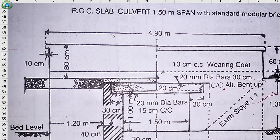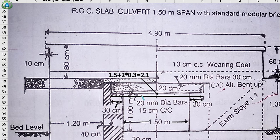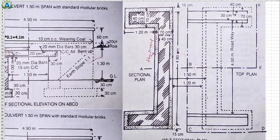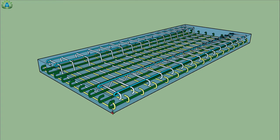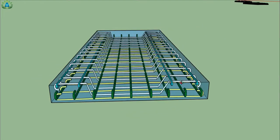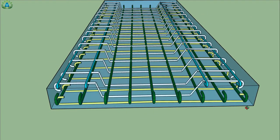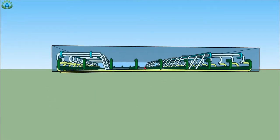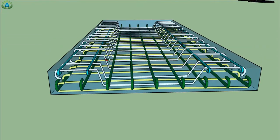We have to calculate the total length, breadth, and height of this slab. The total width of this slab is 1.5 meter opening plus 30 centimeter bearing on each side, making the total width 2.1 meters. The height of the slab is 20 centimeters, and the slab runs over a length of 4.8 meters.